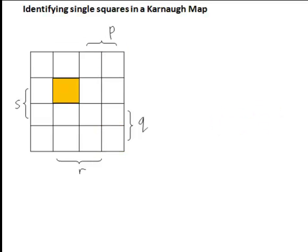And finally, of course, if you're left with any single squares that are not connected to any other squares in eight squares, four squares, two squares, or one squares, that will give an expression in terms of all four variables, which is clearly the least simple. And this one, for instance, here, that orange square is in P bar. It's also in Q bar. It's in R, and it's in S. So that's how we identify eight squares, four squares, two squares, and one squares of ones in a Karnaugh map.